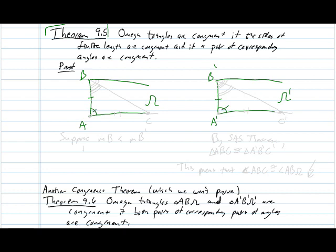And now what we need to show for these two omega triangles to be congruent is that the angles at B are congruent. So suppose that angle B, the angle at B, is not equal to the angle at B prime. Then one of them has to be smaller than the other one. And without loss of generality, suppose that the measure of angle, the angle at B is smaller than the angle at B prime.